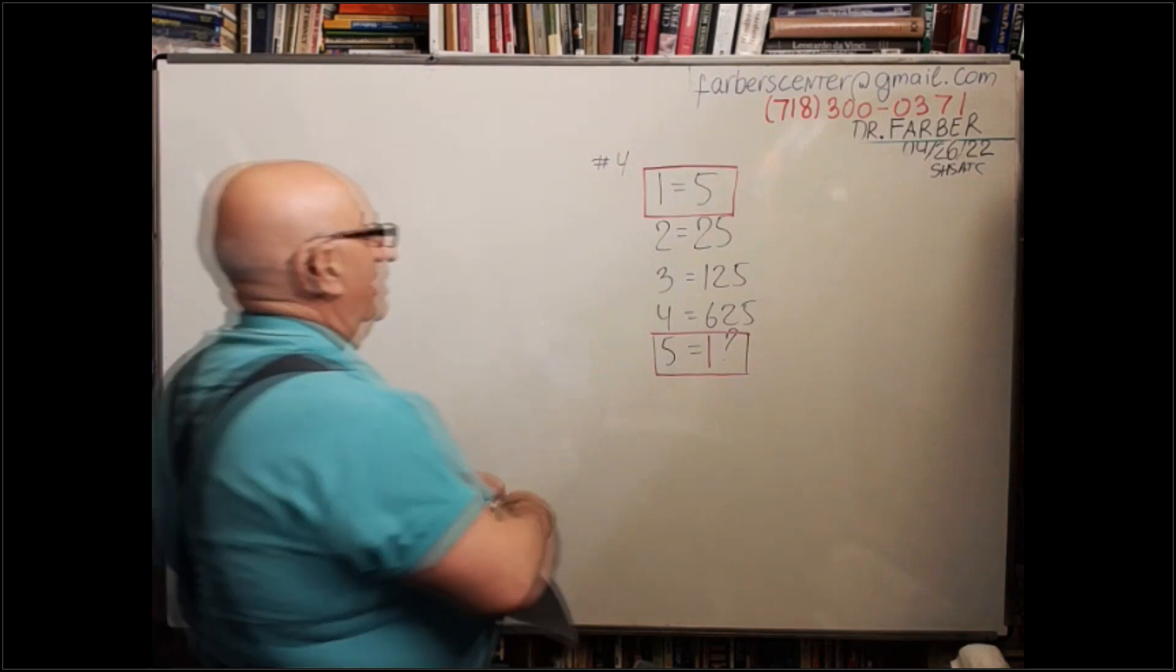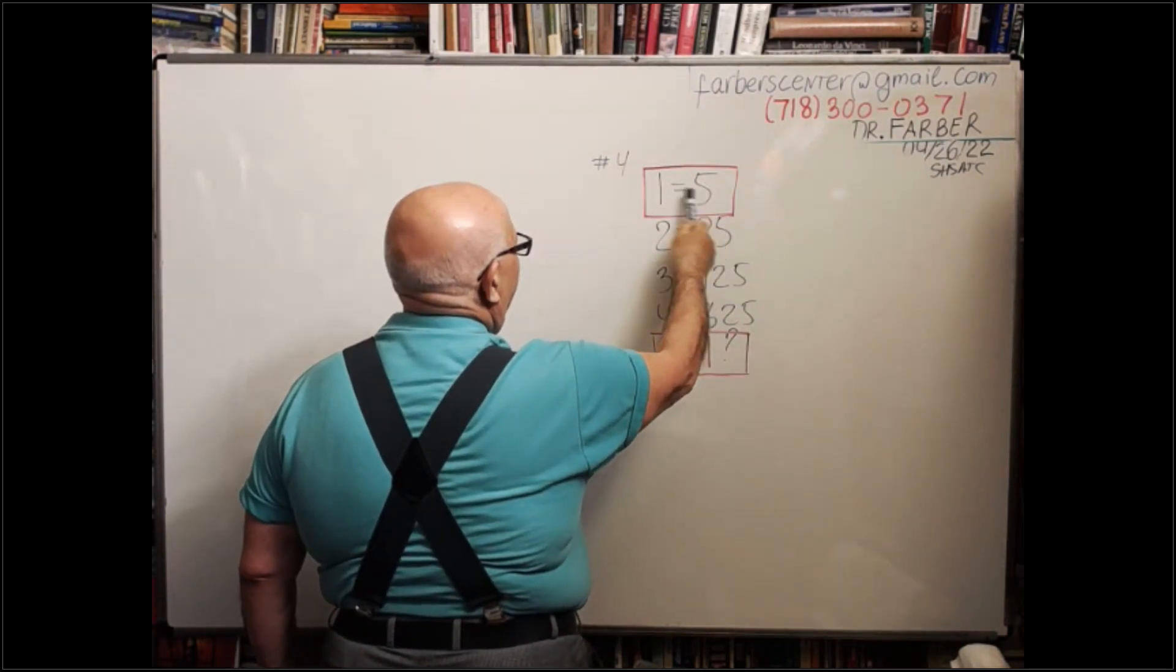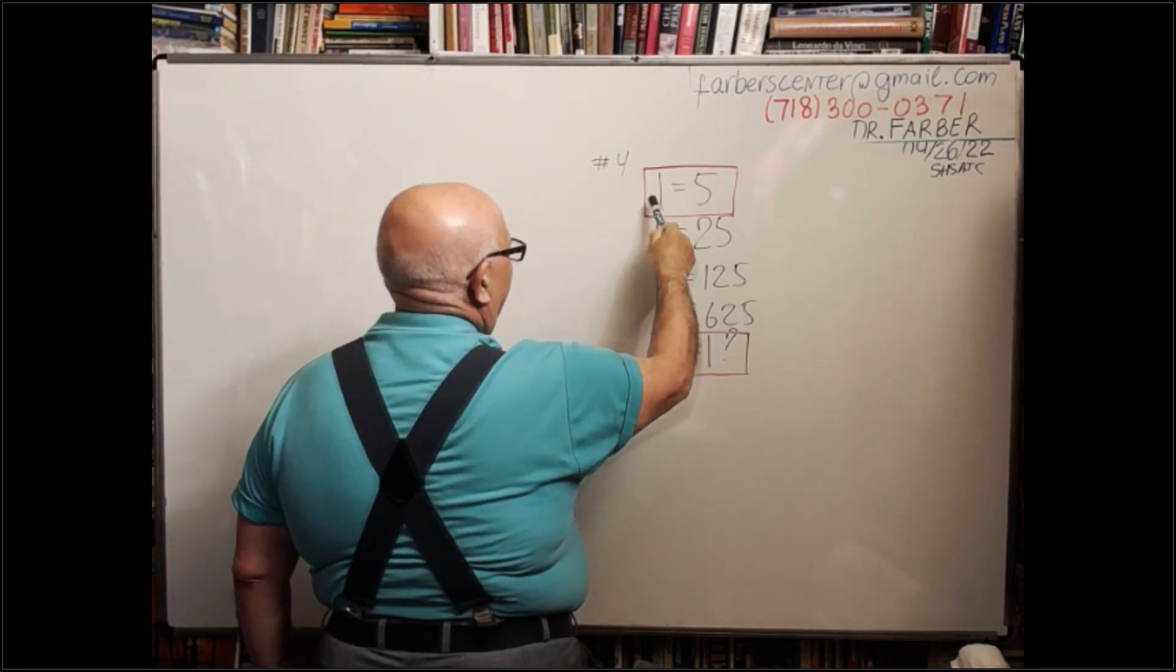Okay, Nicole, if 1 equals 5, read it backwards. 5 equals what? 1. One.